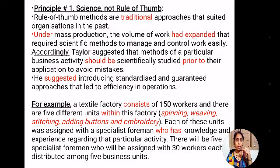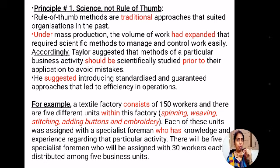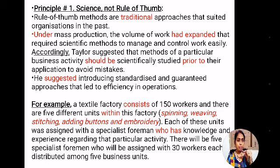The first principle is science, not rule of thumb. He said that rule of thumb methods are traditional approaches that suited organizations in the past. But now under mass production, the volume of work had expanded, requiring scientific methods to manage and control work easily. Accordingly, Taylor suggested that methods of a particular business activity should be scientifically studied prior to their application to avoid mistakes.